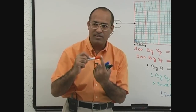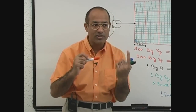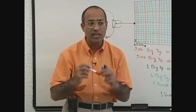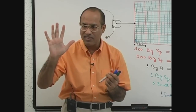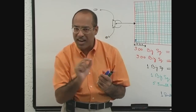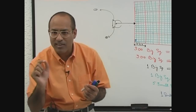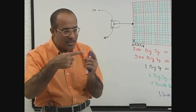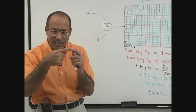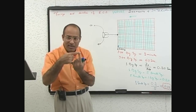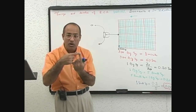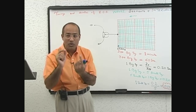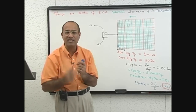300 big squares pass in 60 seconds, so 1 big square equals 60 seconds divided by 300, which is 0.2 second. And every big square has 5 small squares, so 1 small square passes under the needle every 0.04 second. During every 0.04 second, one small square passes under the ECG needle.